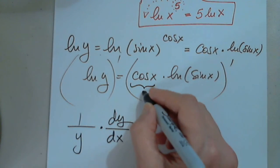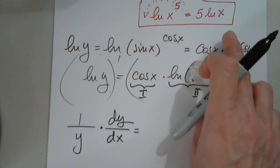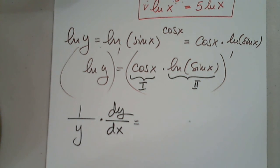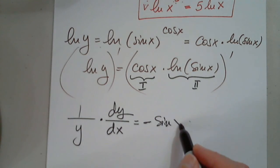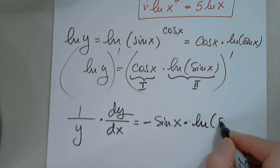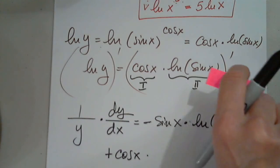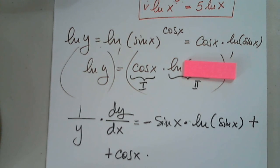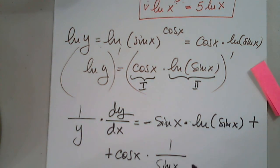The right side is a product of cosine x and natural log of sine x — function one times function two. Differentiating with the product rule: cosine prime is negative sine x, times the second function natural log of sine x, plus cosine x times the derivative of natural log of sine x, which is 1 over sine x times cosine x.